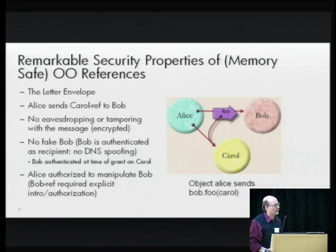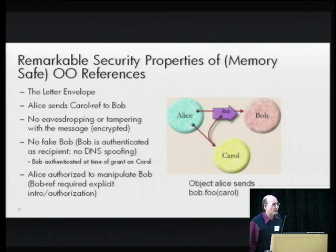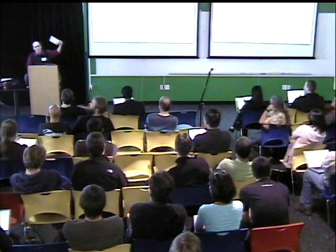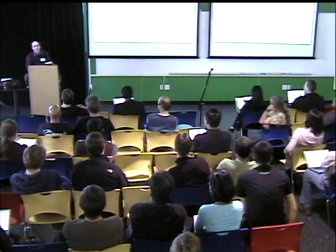Now we'll talk about the remarkable properties of the ordinary object-oriented message send. But first, a brief analogy — the letter envelope, which has been under evolution for over 2,000 years. I'd like to see us achieve the same quality of security as the letter envelope in less than 2,000 years. We'll look at this envelope from the point of view of my mother-in-law and from the point of view of a security guru.